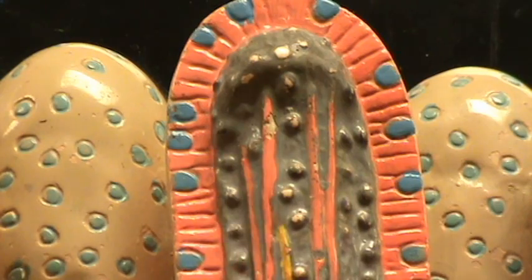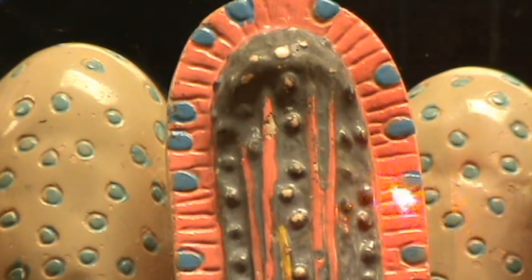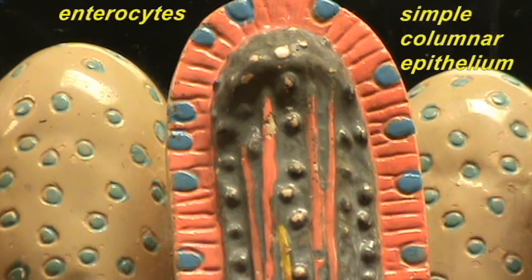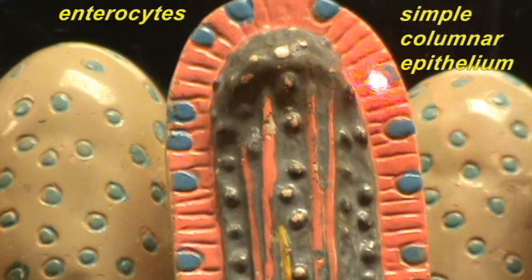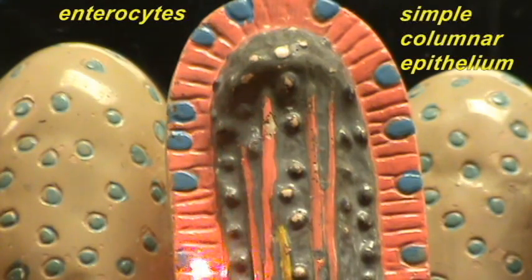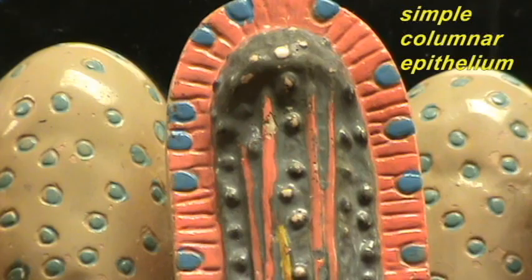Here you can see the cells that form this simple columnar epithelium. There is more than one type of cell. The enterocytes are the most numerous pink-colored cells. And among the enterocytes, you have cells which are producing mucus. Because of their appearance histologically, they're referred to as goblet cells.